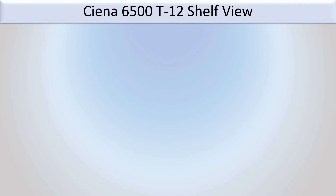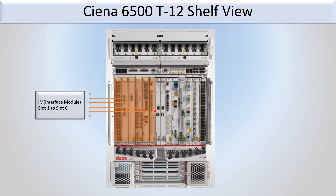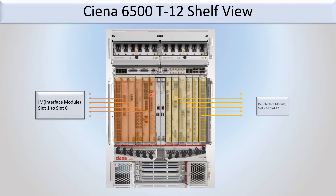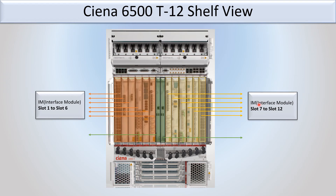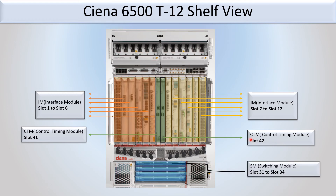Now looking at the C&S 6500 T12 shelf view in a different model view: slot 1 to slot 6 is for the interface module, slot 7 to slot 12 is also fixed for the interface module. Slot 41 and slot 42 are fixed for the CTM, and slot 31 to slot 34 is fixed for the switching module.